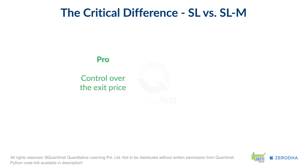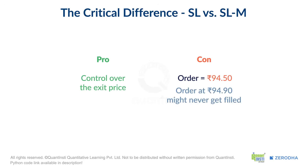The pro is that you have control over the exit price. The con is that if the market gaps down violently — say from Rs. 95.10 to Rs. 94.50 in a split second — your order at Rs. 94.90 might never get filled, leaving you in a losing trade.